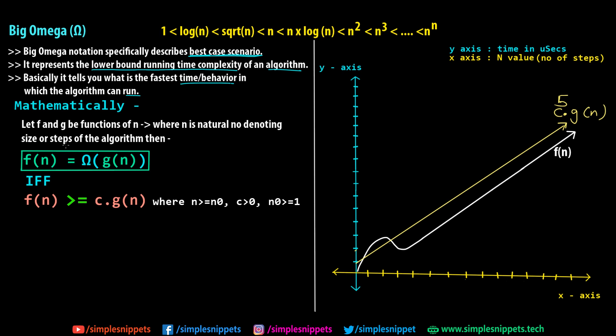Mathematically, f(n) = Ω(g(n)) if and only if f(n) ≥ c·g(n), where n > n₀, c > 0, and n₀ ≥ 1. So the condition is flipped compared to big O: here f(n) must always be greater than or equal to c·g(n), making g(n) the lower limit of f(n).